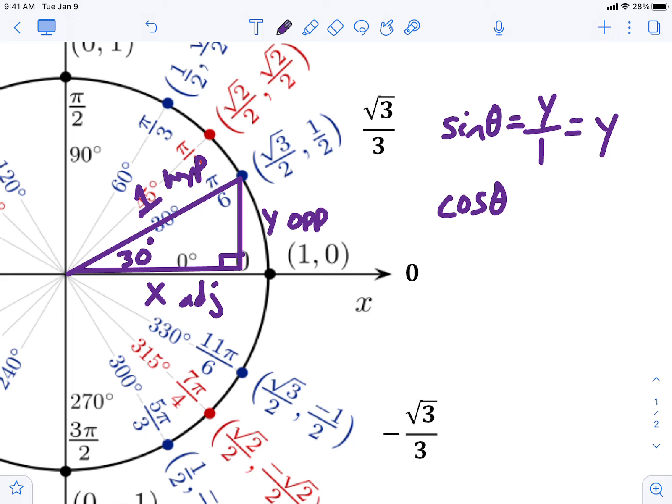Cosine, same idea. The adjacent is x over the hypotenuse 1, well that makes it just the x value. So like for cosine of 30 degrees, I would just find the x value and say cosine of 30 degrees is root 3 over 2.